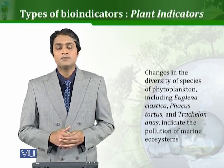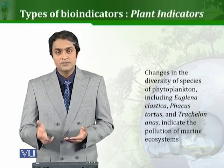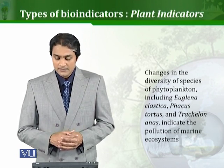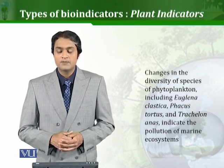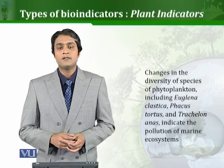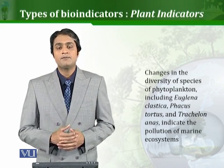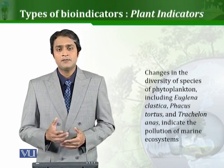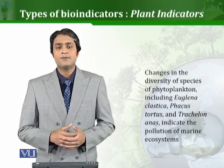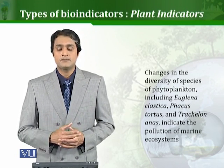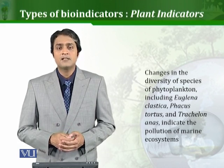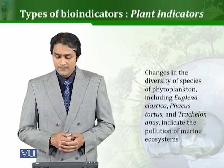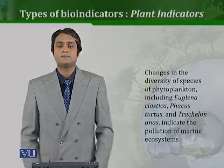There are many different plants and phytoplanktons that can be used for this purpose. For example, Euglena plastica, Phacus tortus, and Trachelomonas indicate the pollution of marine ecosystems. As discussed, for every ecosystem and every environment there is a certain organism best suited to study it. These were a few examples of how plants can be used as bioindicators, with more to follow in the next lessons.